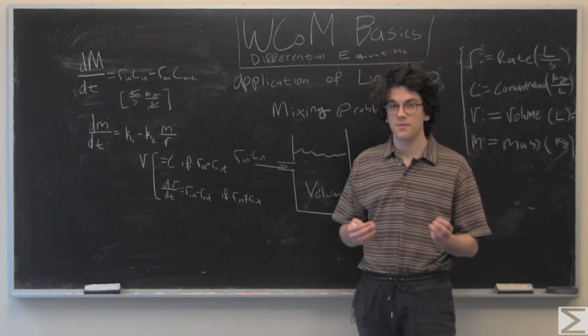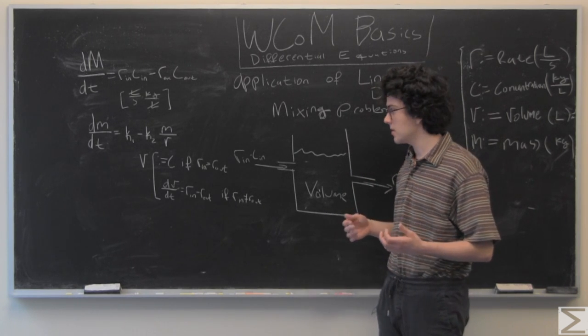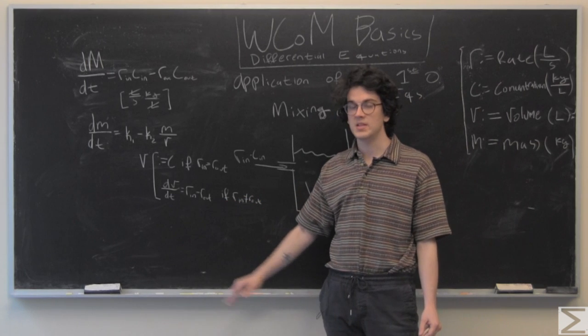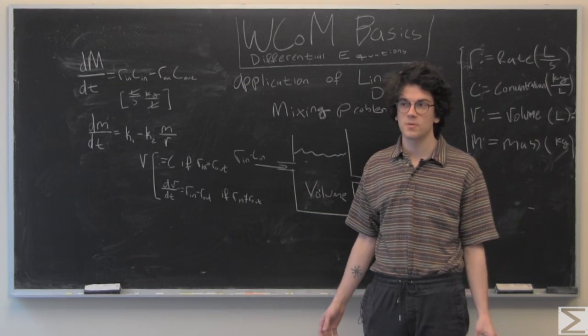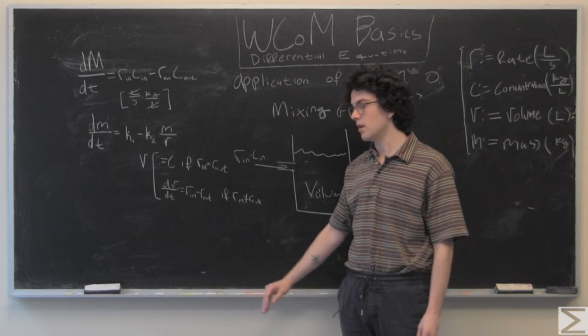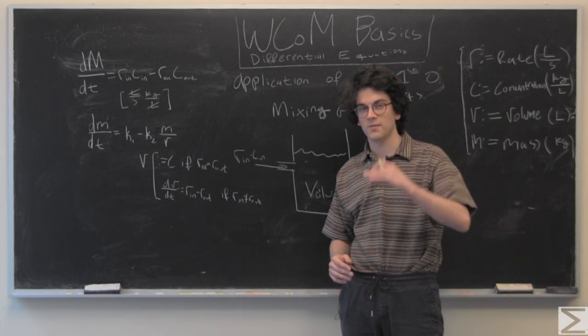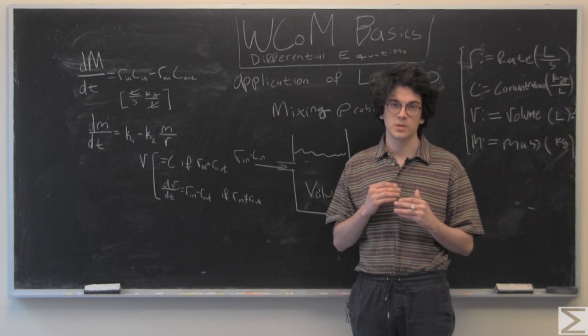If stuff is coming in faster than it's coming out, you have positive dv dt. If it's coming in slower than it's coming out, then you have a negative dv dt, meaning that it's either going to be, the volume is going to be increasing or the volume is going to be decreasing.